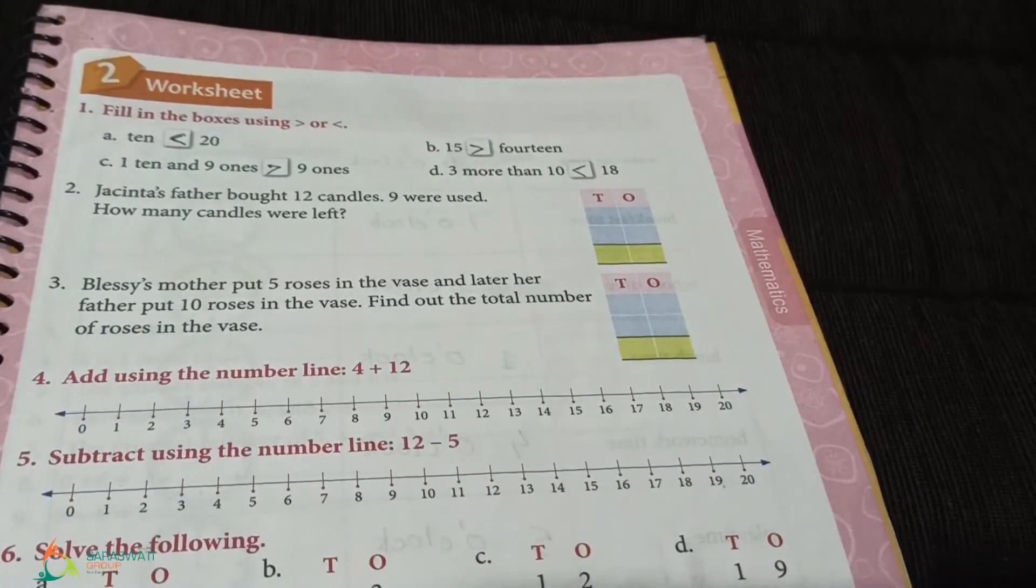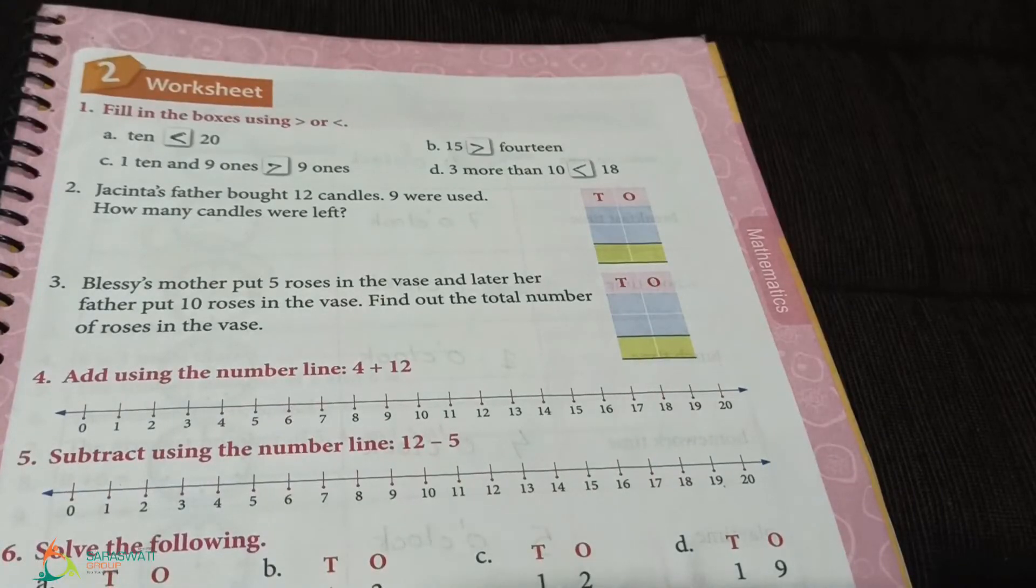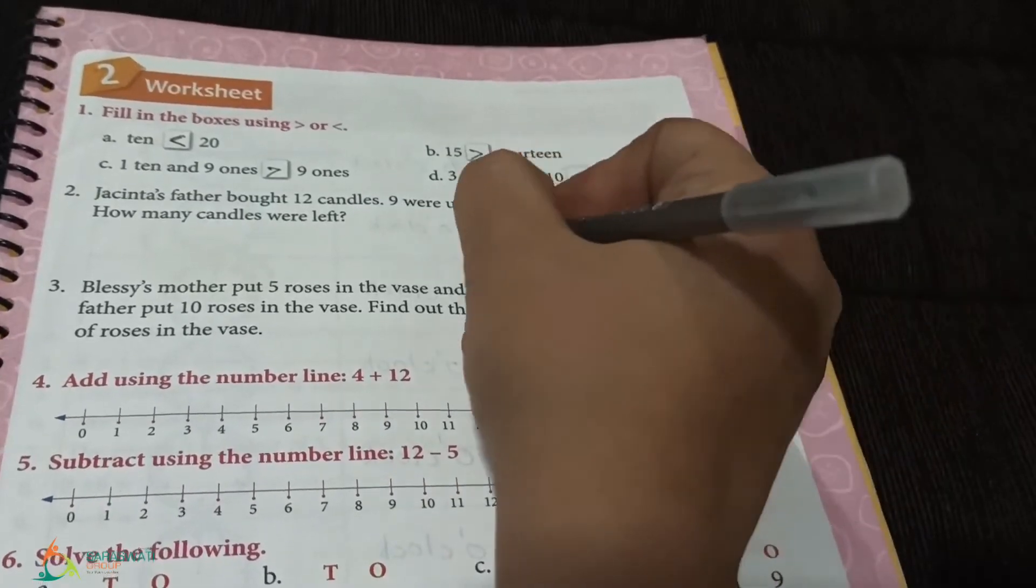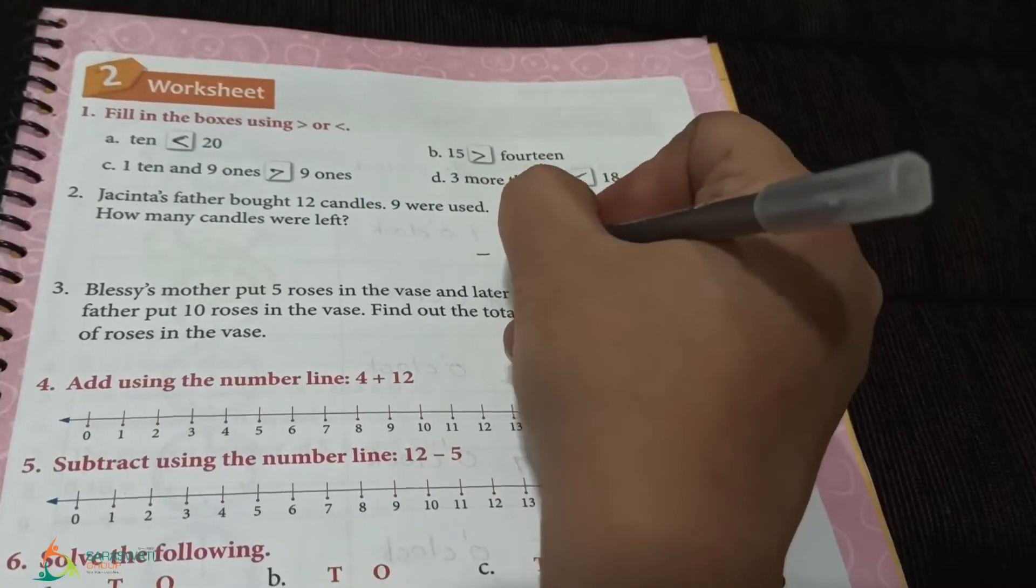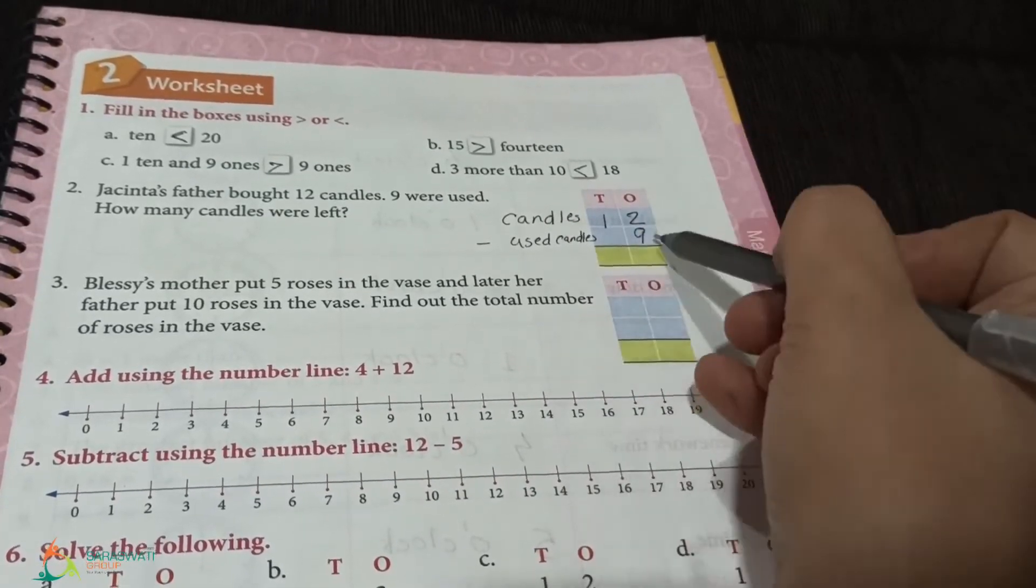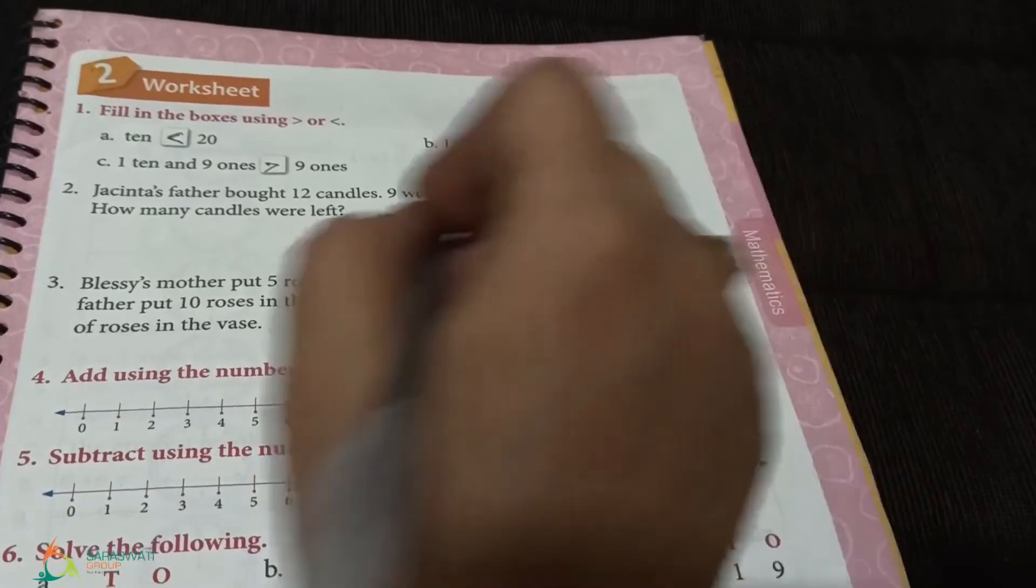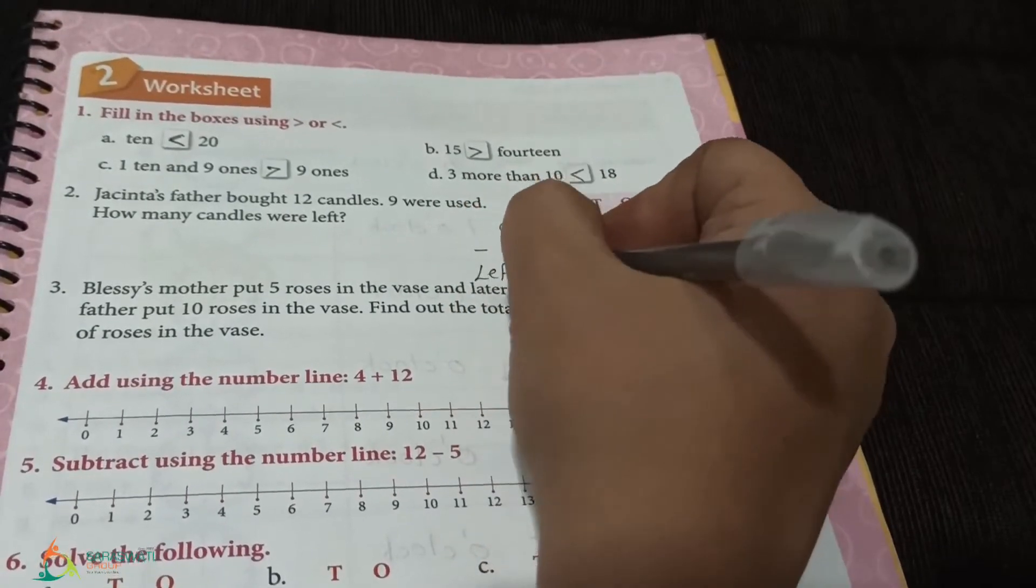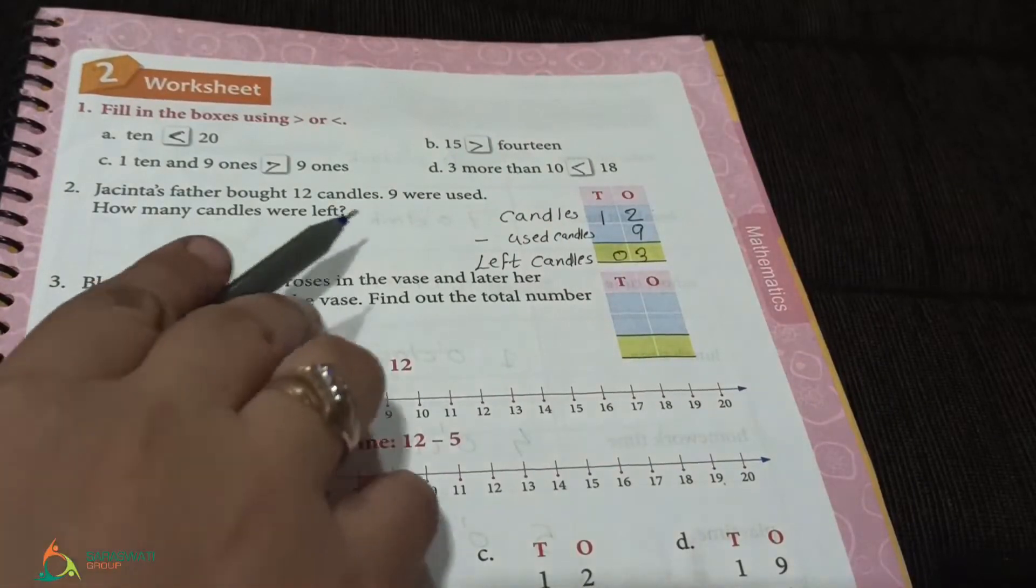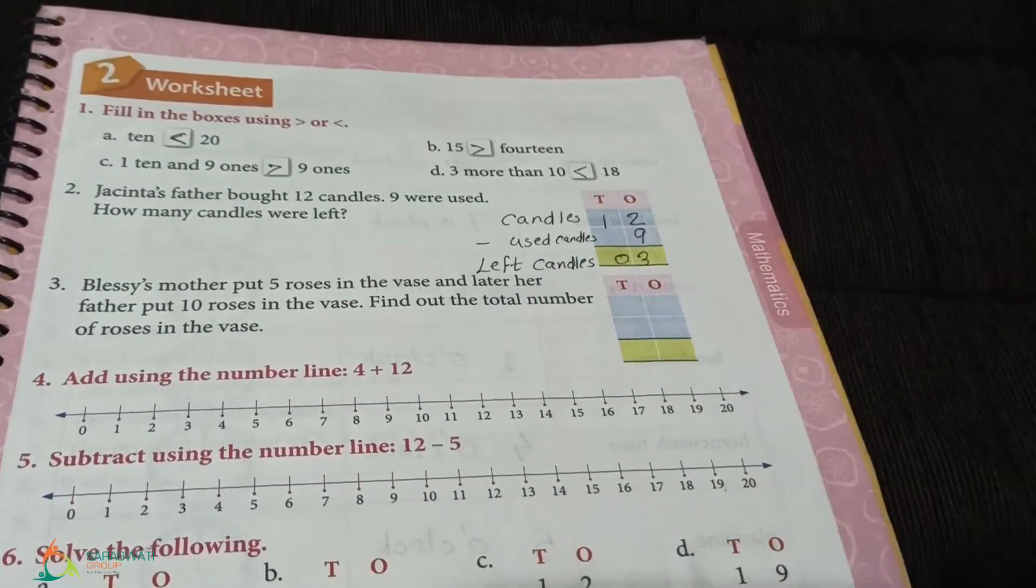What is this question about? Addition or subtraction? It is about subtraction because 9 is used. So, how we will write? 12 candles minus 9 used candles. 12 minus 9 is 3. So, we will write 3 left candles. This is 2 marks or more, so you will write the statement. If just 1 mark, you can write only the subtraction.